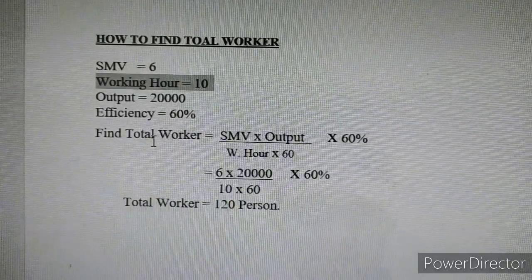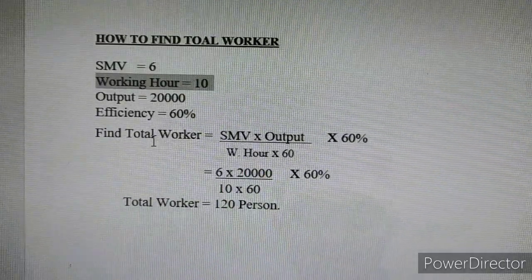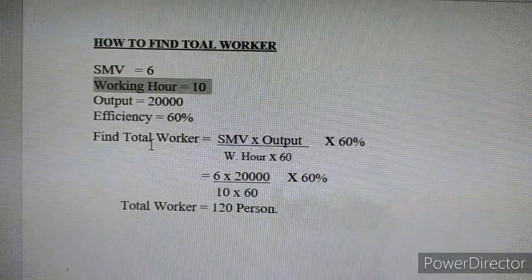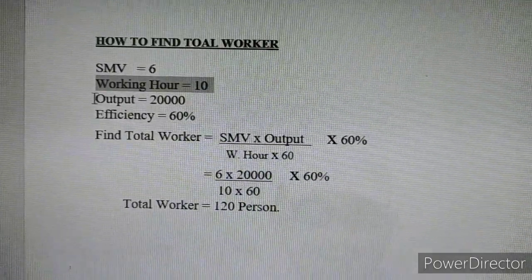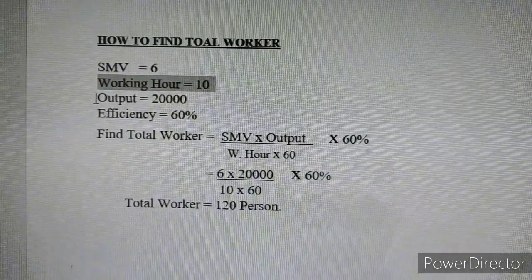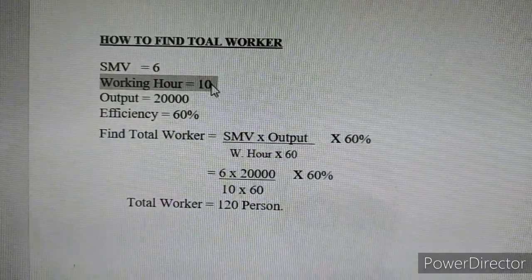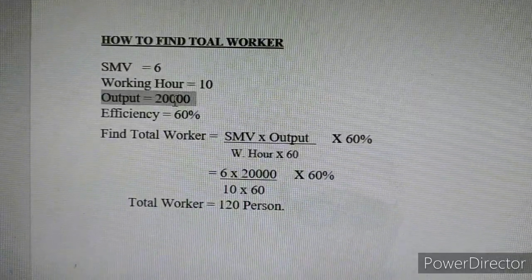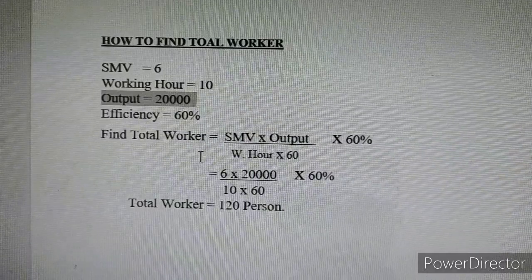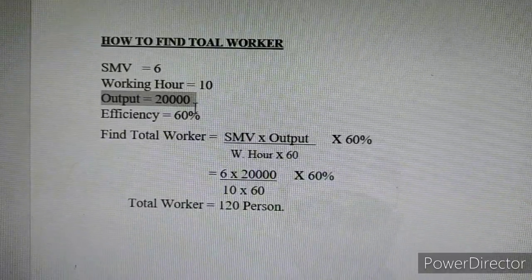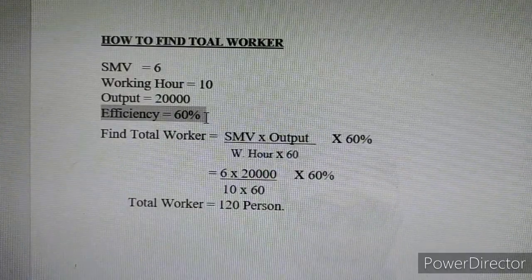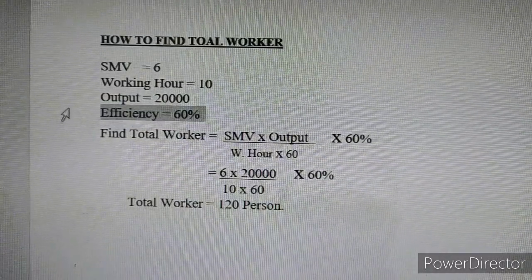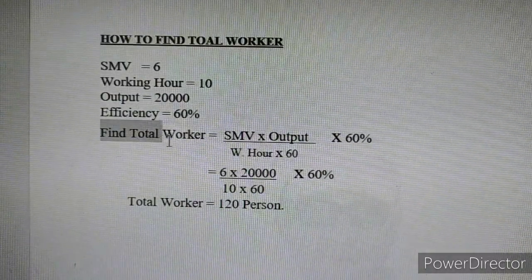Our PM has told us we are able to do it at 20-20s. The total amount of time — 10 hours — we are able to do the total output. So we have to do the total quantity of output. We have to do the efficiency, and the efficiency target in our factory is 60%. Now we have to find the value.